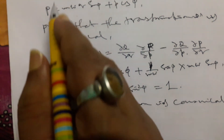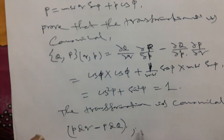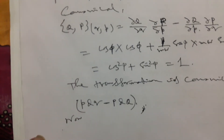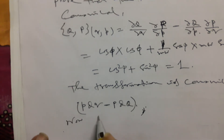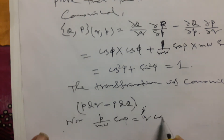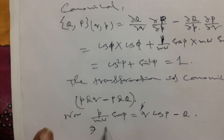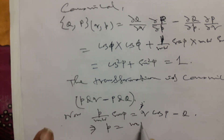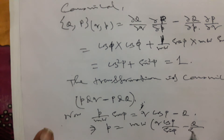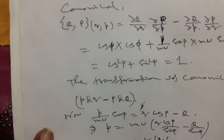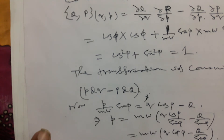At first we have to calculate small p. From the expression (P/mω) sin φ = q cos φ minus small q, we can rearrange to get p equal to mω q cot φ minus Q / sin φ.